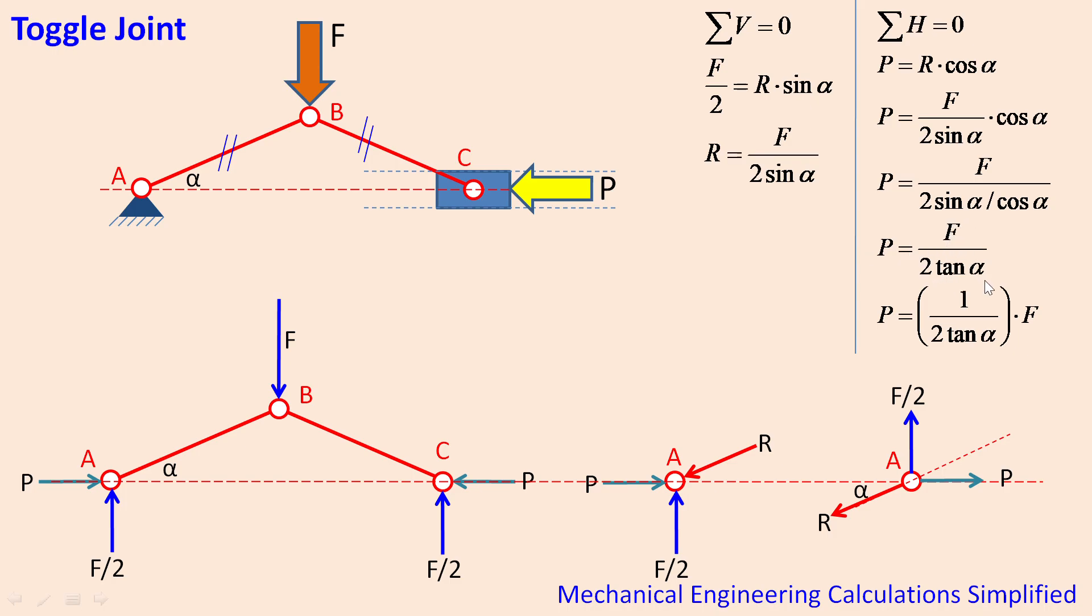Now I have just created a separated F and this particular component, so this component 1 divided by 2 tan alpha into F will be equal to P.